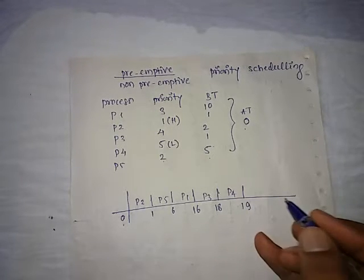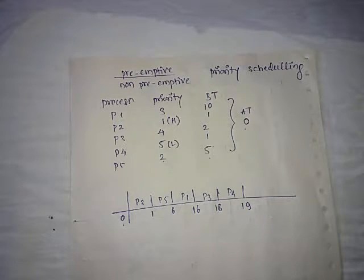Last is P4 with a burst time of 1, completing at time 19. In this way, we've scheduled our priority scheduling example. Now we draw a table with completion time, turnaround time, waiting time, and response time.